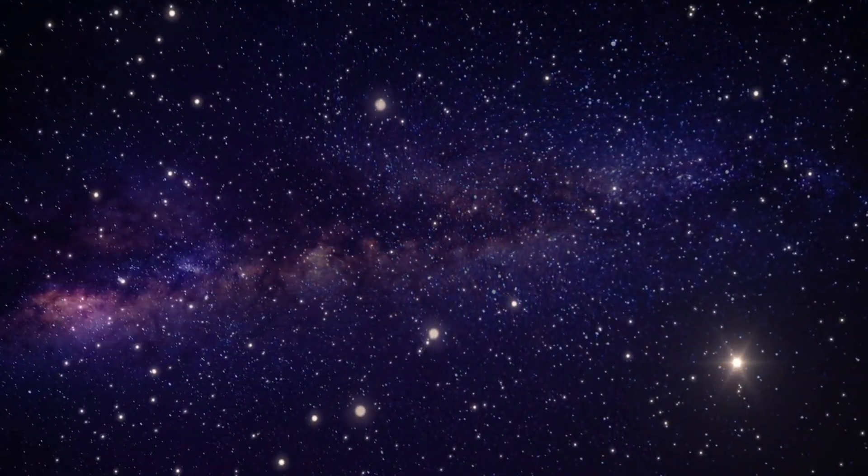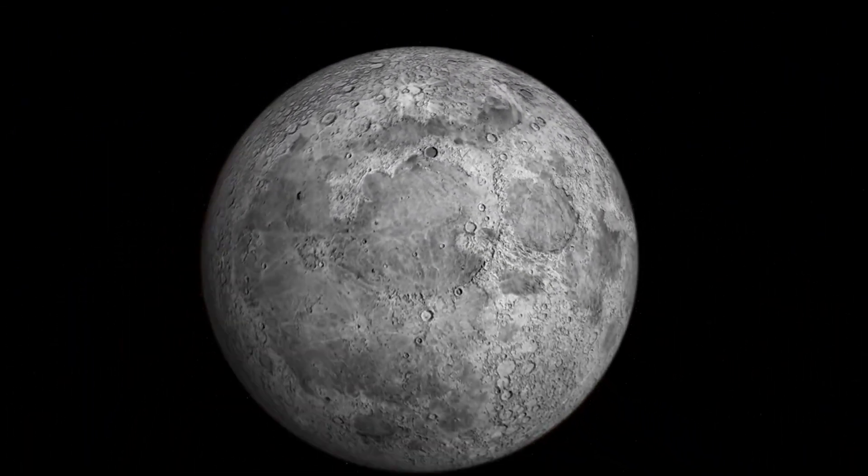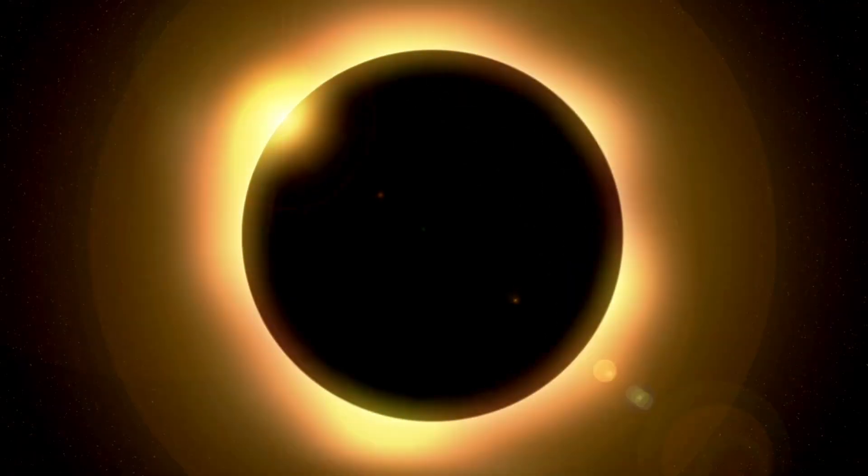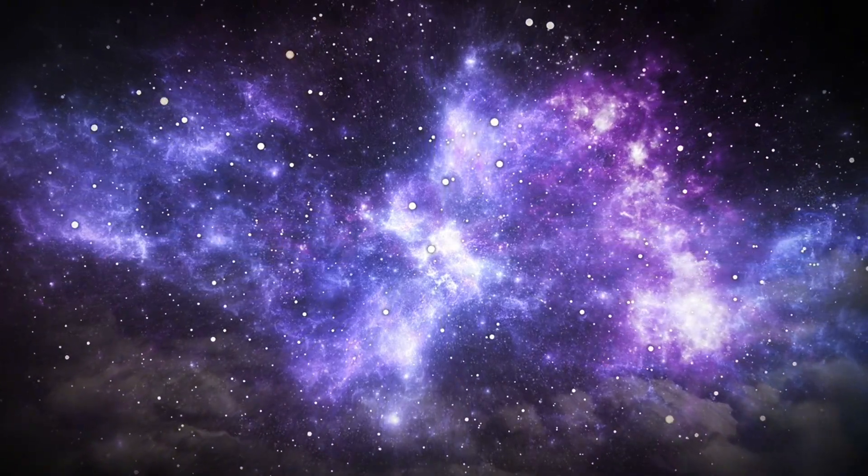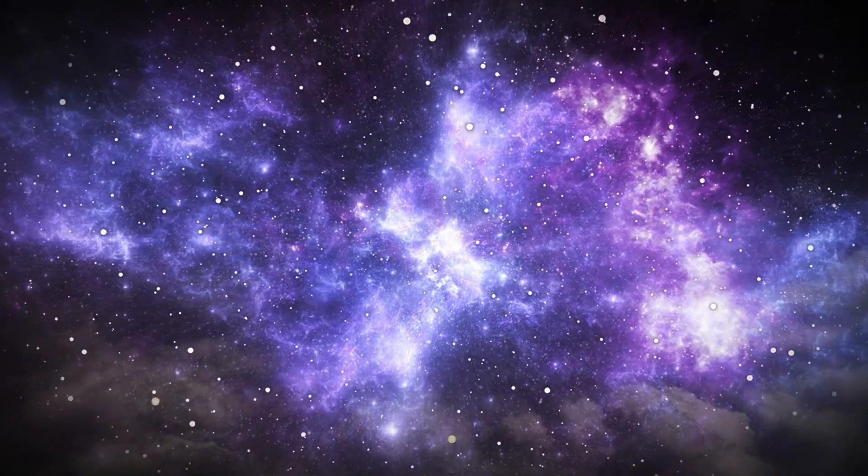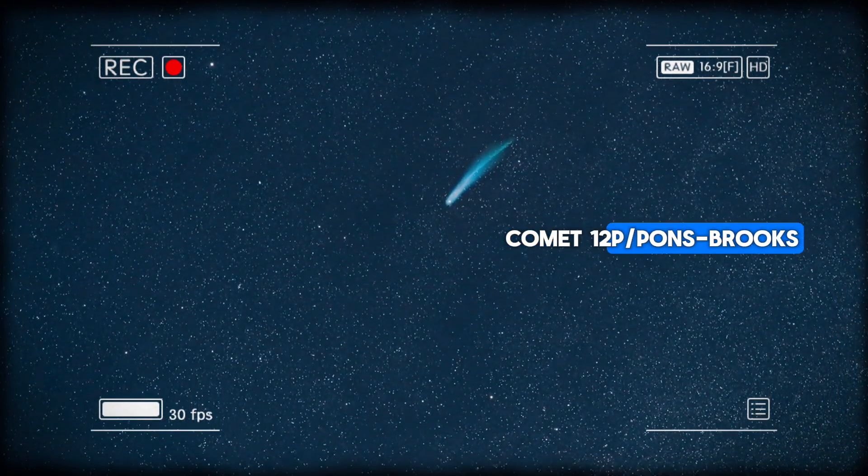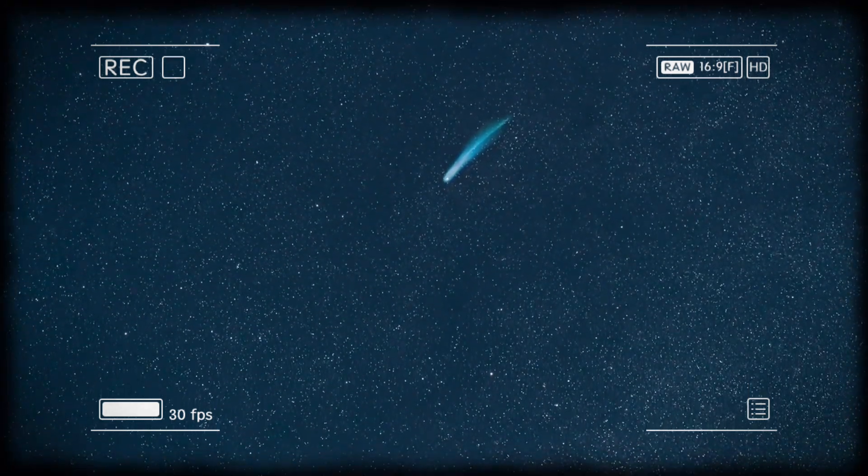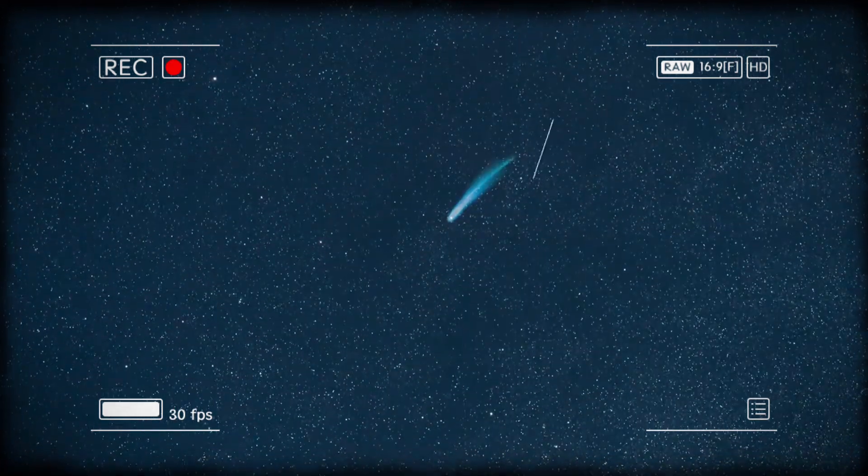But hold on to your hats, because the excitement doesn't end with the nova. In the cosmic theater of 2024, we're in for a total solar eclipse—a rare phenomenon where the moon's shadow briefly dims the sun's radiant glow upon our humble Earth. This celestial ballet of alignment promises a breathtaking visual display and an unparalleled opportunity for scientific inquiry. But wait, there's more. Making its grand return is the green comet 12P/Pons-Brooks, offering us a captivating glimpse of a primordial wanderer whose icy journey through our solar system serves as a window into distant epochs of cosmic history.